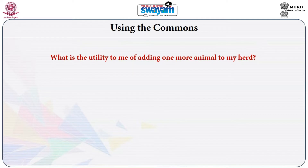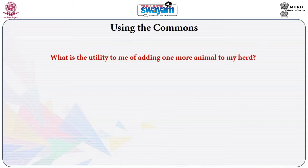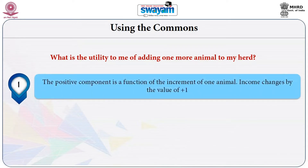This is how individual users or farmers behave when they use any common. If we know the tragedy is the outcome, why does an individual farmer still add one more animal? There are two components: a positive component, which is a function of the increment of one animal — income changes by a positive value — and a negative component.